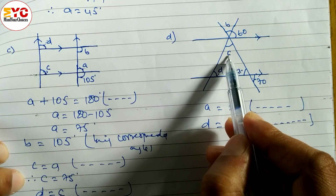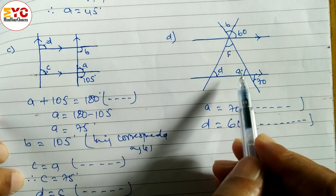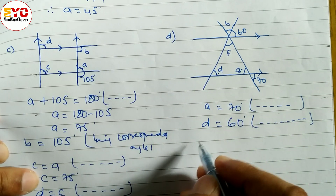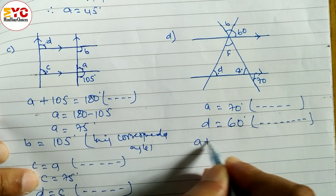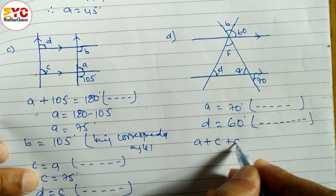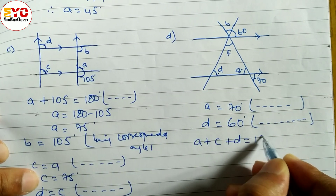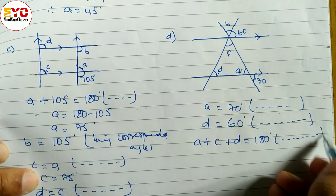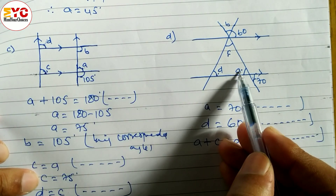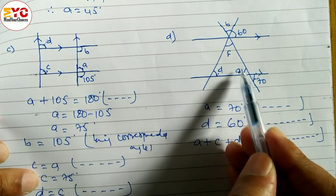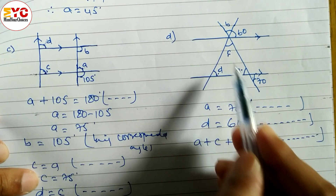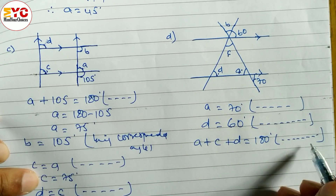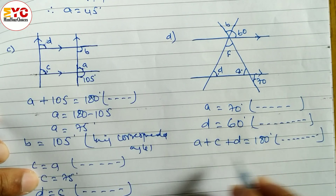We have a also. We can easily find out c. a plus c plus d is equal to 180 degrees. Reason: sum of angles of the triangle. When you add three angles of a triangle we get 180 degrees.